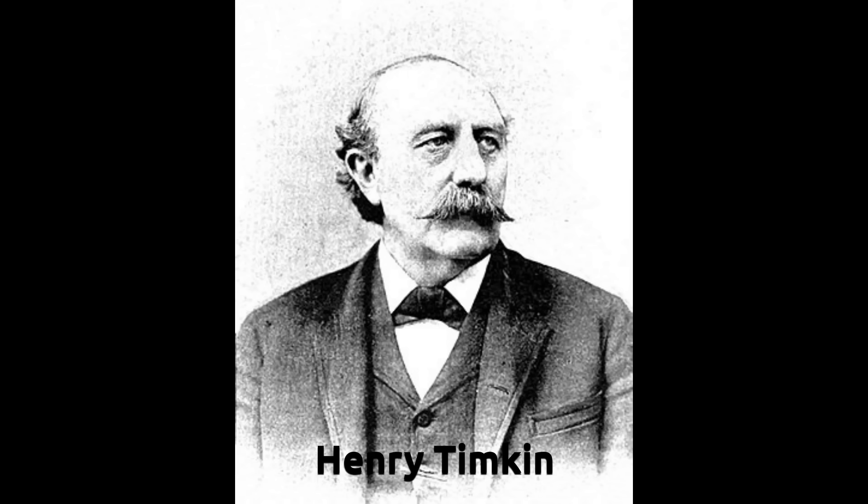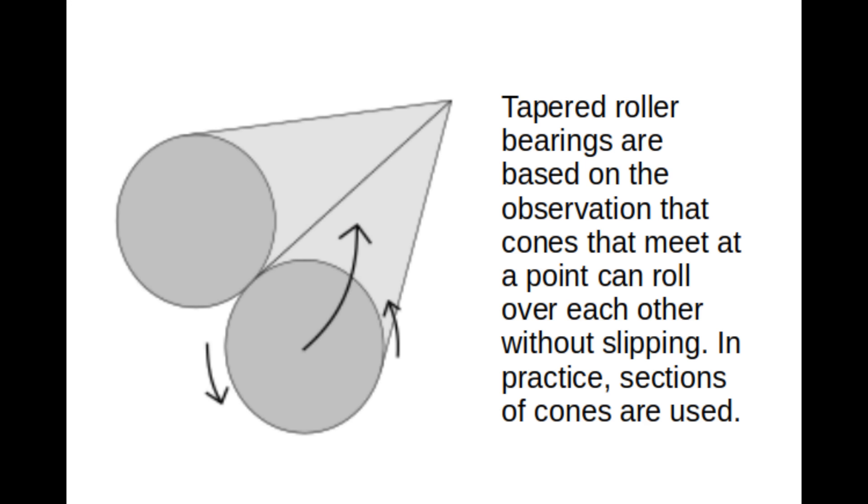Now, this curious property of cones was probably noticed about 1898 by a chap called Henry Timken, who introduced a brand new bearing based on this. And this was a real game changer for that time. Because at that time, bearings were little more than an axle and a hole stuffed with animal grease. This new style of bearing could transfer the load much better and was subject to much less friction. And he called it a tapered roller bearing. Tapered roller bearings are absolutely everywhere now.